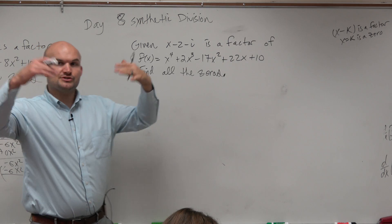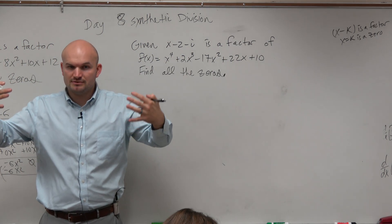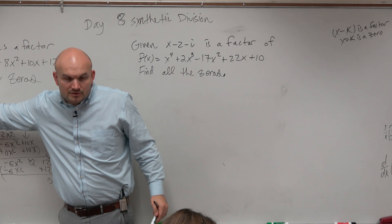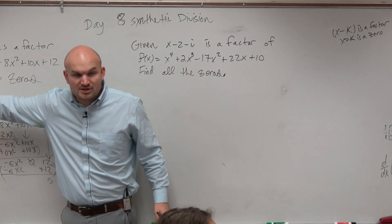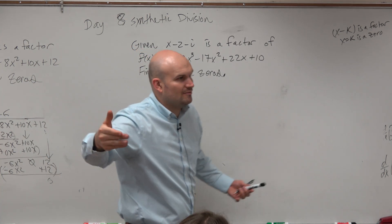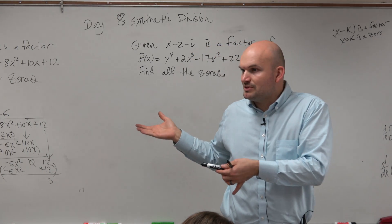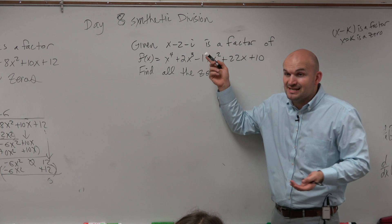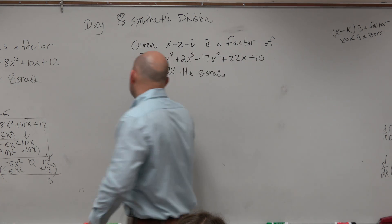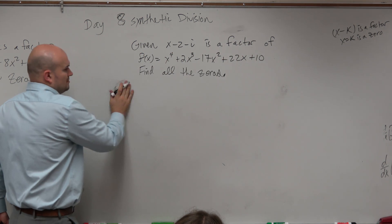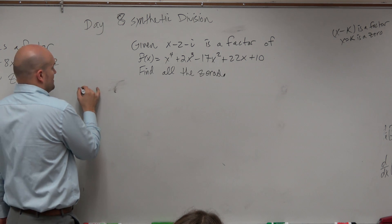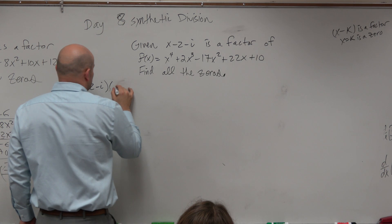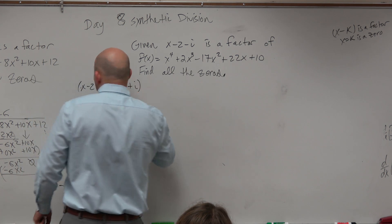So what we need to do is understand our information about factors and zeros. If we know square roots or irrational terms are plus or minus, what do we know about i? How does i relate to irrational numbers — square root of negative 1. So we know that if negative i exists, positive i exists. That means if x minus 2 minus i is a factor, then x minus 2 plus i is also a factor.